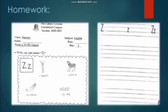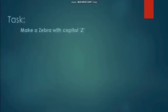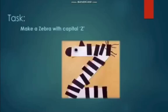Now comes your homework. Here comes the worksheet. As you can see here, the worksheet says: write, say, and color letter Z. You will color the objects like zipper, zebra, zigzag, and zucchini. Then on the other worksheet, you will write letter Z, the capital Z and small z. Now the task: make a zebra with capital Z like this. It's a very fun activity. You will enjoy doing this, and you must practice writing letter Z, the capital and small.